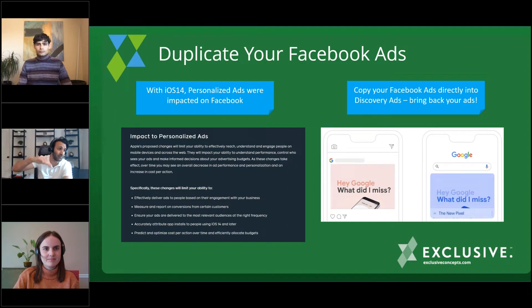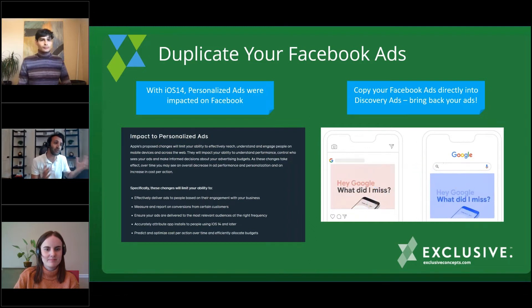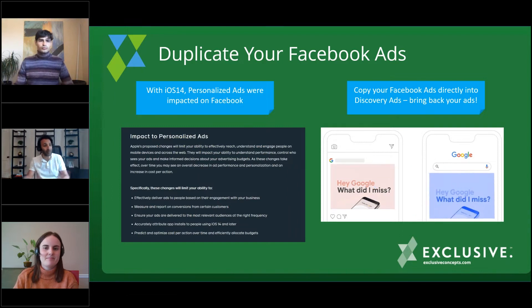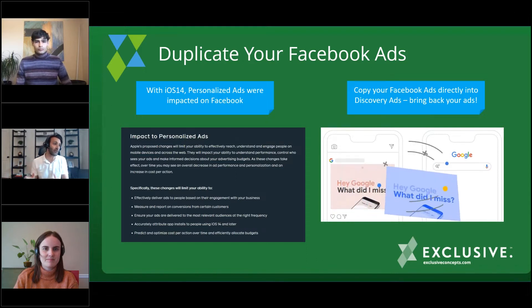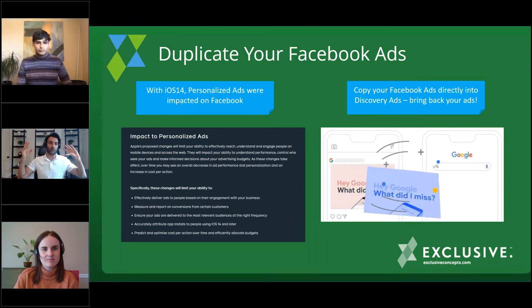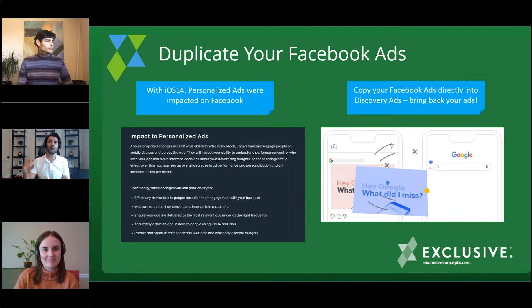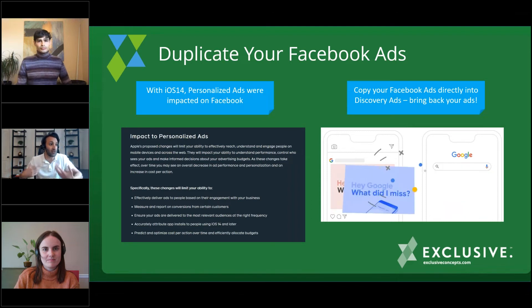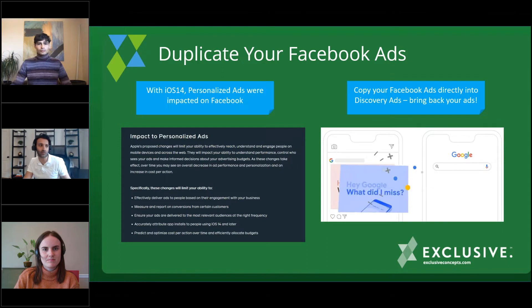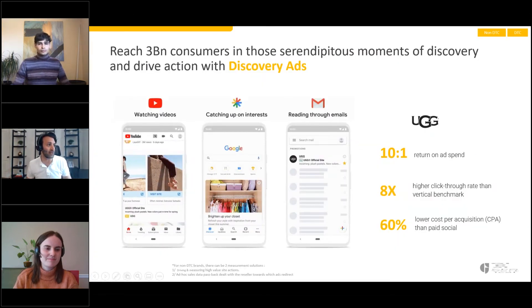A lot of people saw their tracked revenue drop so much they stopped investing in Facebook despite having great ads and targeting. Well, you could take those great ads or that structure and basically copy and paste it into Discovery Ads. Discovery Ads show on Gmail, the Discovery app, as well as YouTube. That's a great way to supplement not just Facebook, but you could also have a YouTube ad and a Discovery ad both showing up in a search result on YouTube — double the coverage.